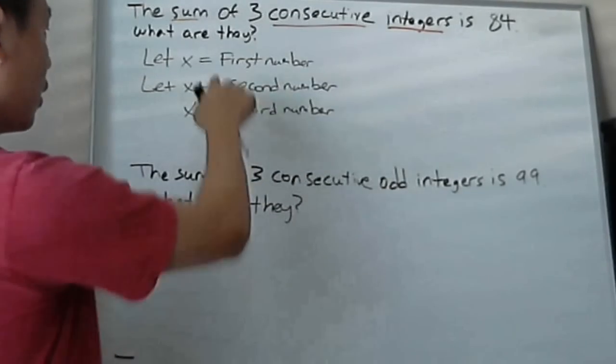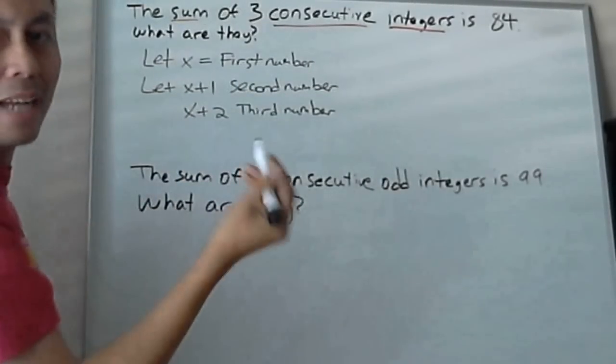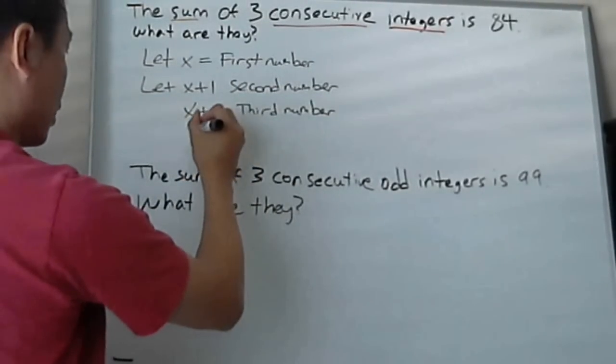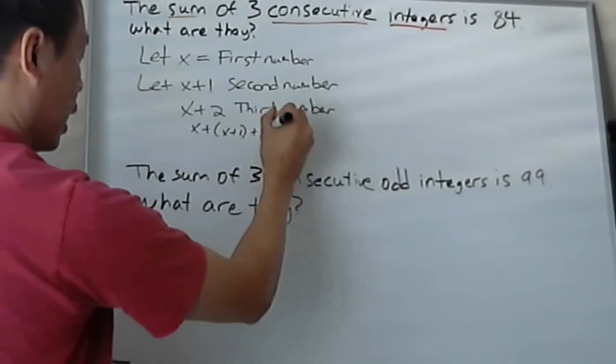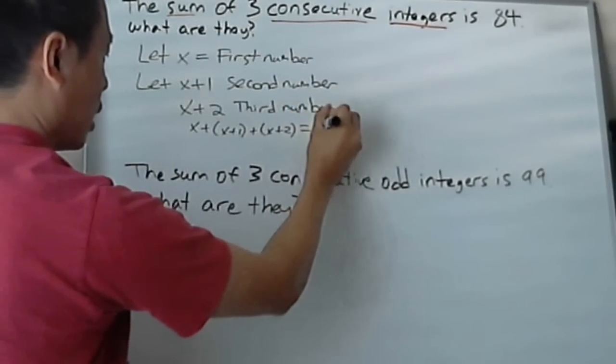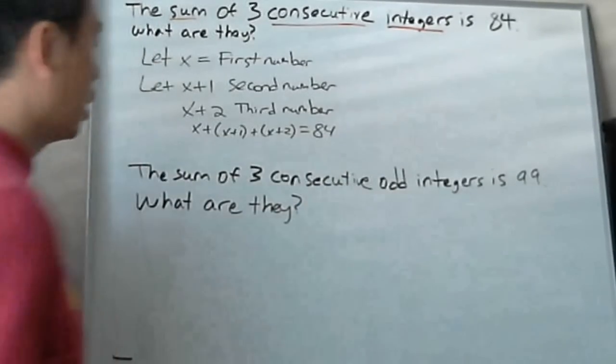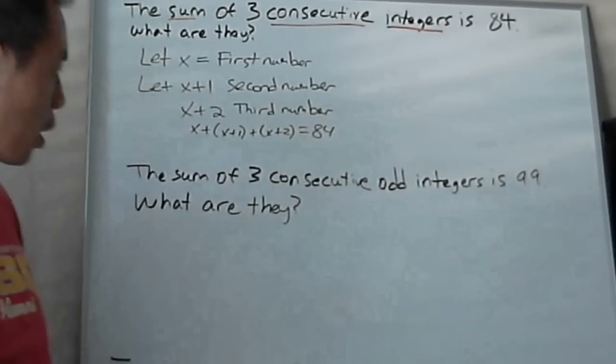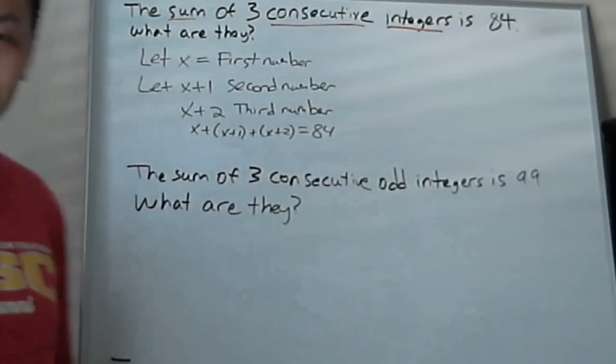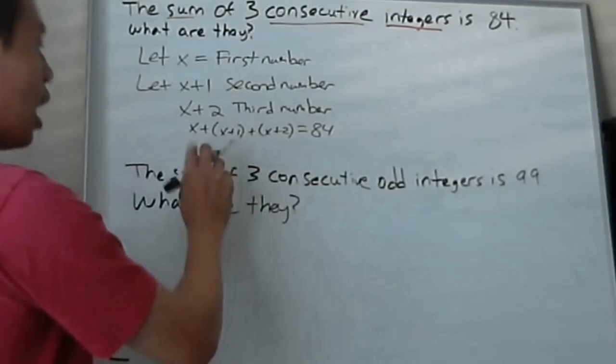So it says the sum of three consecutive integers is 84. So what do I do? Sum means I'm adding them up, right? So I just add x plus x plus 1 plus x plus 2 equals 84, because that's the sum. Sum of number 1, number 2, and number 3, the three numbers, is 84. And see how I set up the equation? It makes sense. So we just solve it.